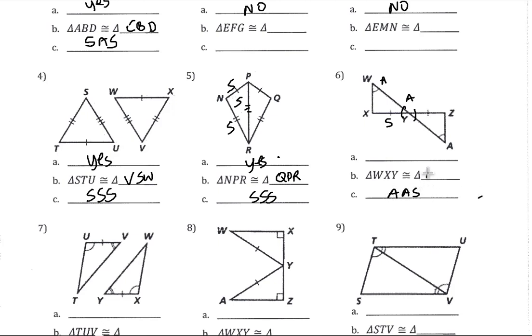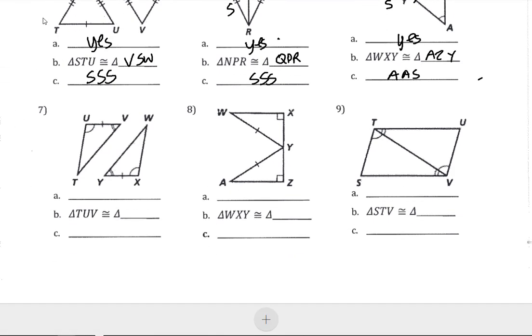For number 6, we have an angle-angle-side pattern between the two triangles, so WXY goes with AZY.